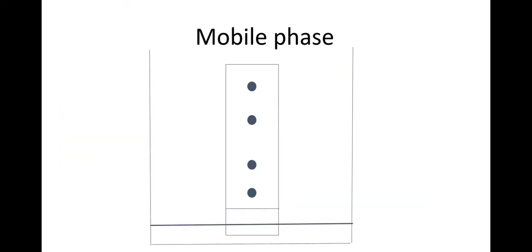So the mobile phase. What you do here is you place your sample in solvent and you allow the sample to run. So what will happen is the solvent will be absorbed by the thin layer chromatography and it will bring up your protein throughout the paper.